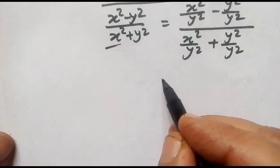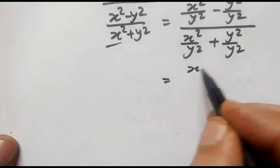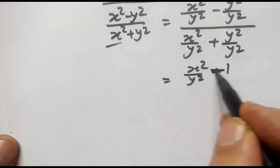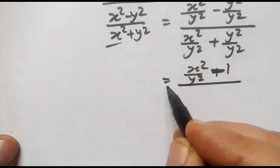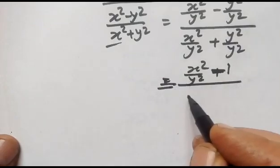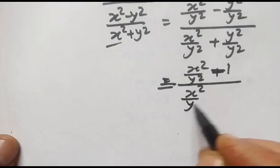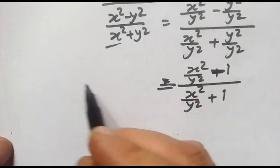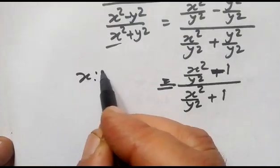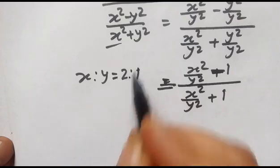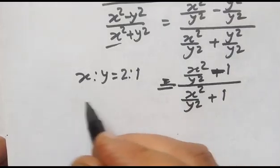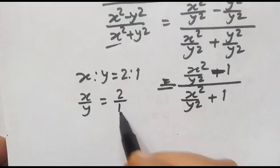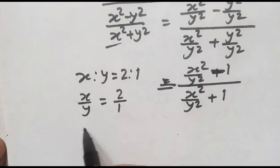In the next step we get x squared over y squared minus 1, over x squared over y squared plus 1. As we have given x is to y is equal to 2 is to 1, we can write x over y is equal to 2 over 1.